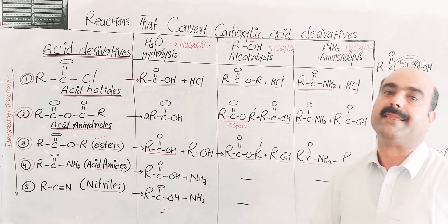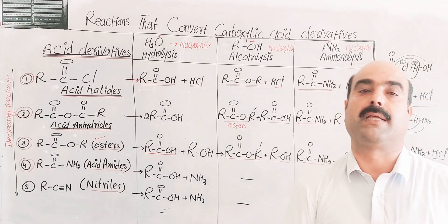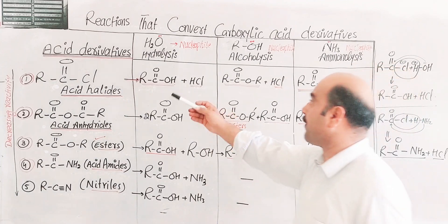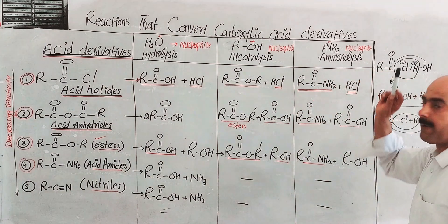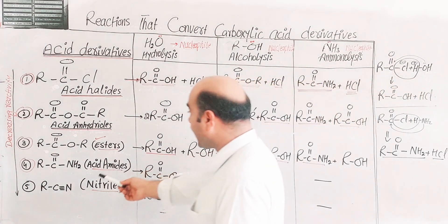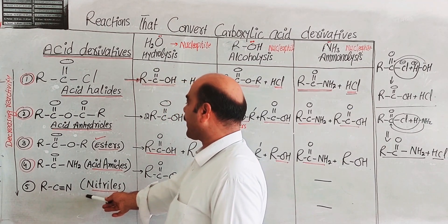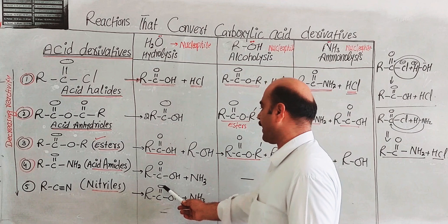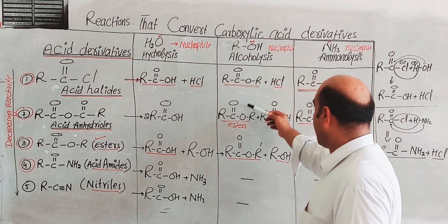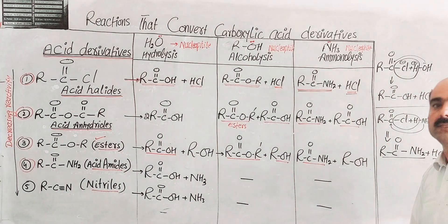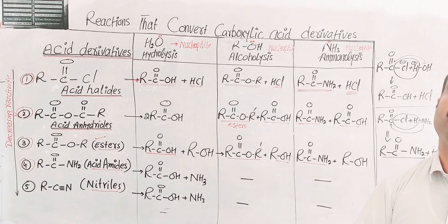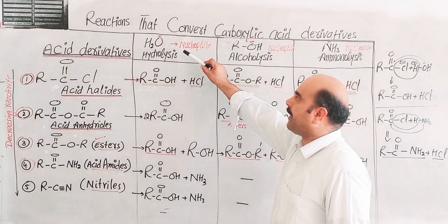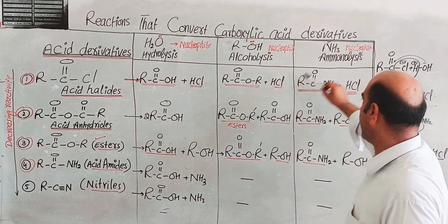This tabular form is used to show how the interconversion of carboxylic acid derivatives takes place. Each acid derivative can be converted into another by using various reagents — like water for hydrolysis, alcohol for alcoholysis, and ammonia for ammonolysis. Thanks a lot for watching the video.